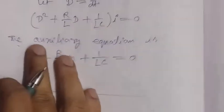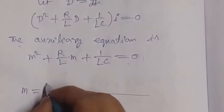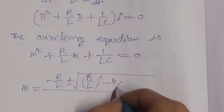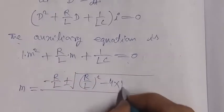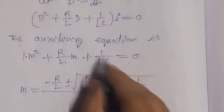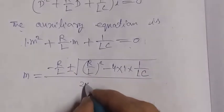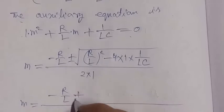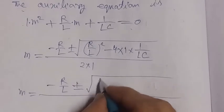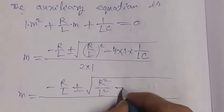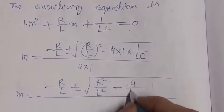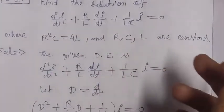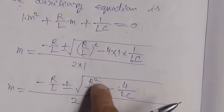Here m corresponds to x, and b = R/L, a = 1, c = 1/LC. So m = (−R/L ± √((R/L)² − 4·(1/LC))) / 2. We expand the discriminant: R²/L² − 4/LC.